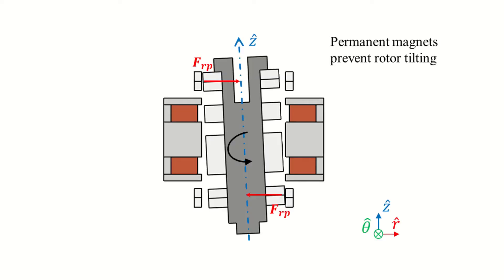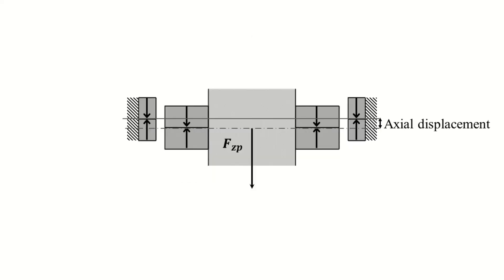When there are radial bearings in opposite ends of the rotor shaft, they also prevent rotor tilting. This permanent magnet configuration also generates an unstable force along the axial direction. If the rotor is displaced along the z-axis, the repulsive force pushes the shaft farther away from the center.